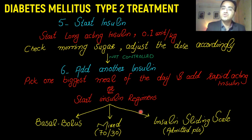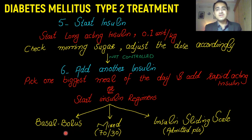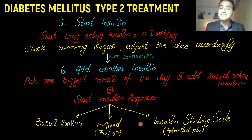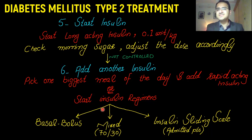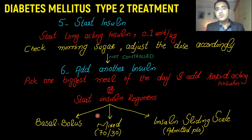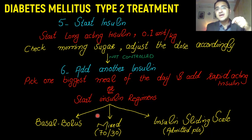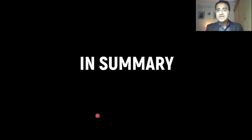Alternatively, you can directly shift the patient to an insulin regimen. Options include basal-bolus, which provides the best control, mixed insulin 70/30, or an insulin sliding scale. These insulin regimens are discussed in detail in a separate video on insulin — check out the link in the description below.